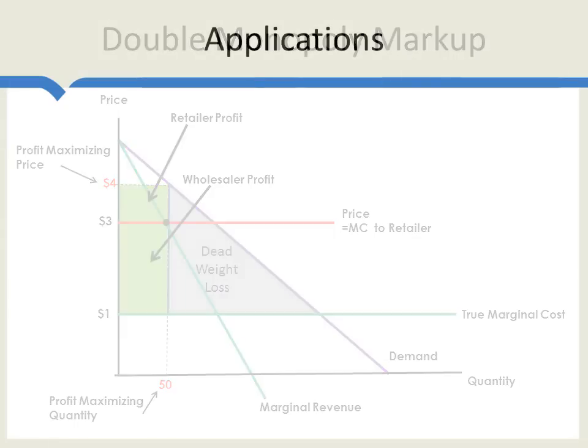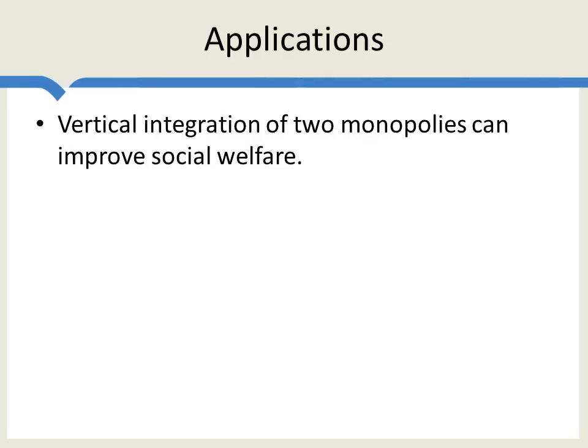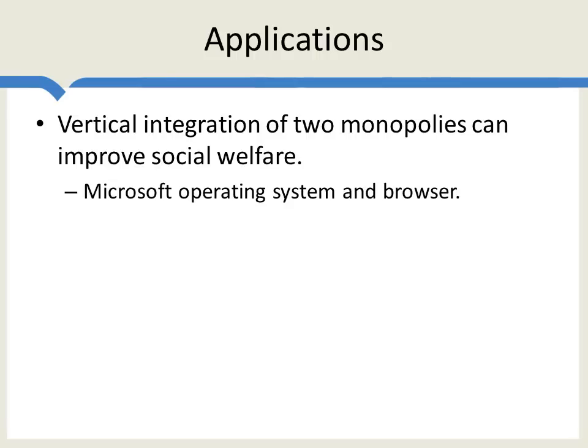Let's look at some applications. This model means that vertical integration of two monopolies can improve social welfare. Monopolies overall aren't great, but if you're going to have a monopoly, it's better to have one vertically integrated monopoly than two vertical monopolies. A classic example is Microsoft, which was accused of leveraging its monopoly in operating systems to get a monopoly in browsers. But consider: would you rather have Microsoft with a monopoly in operating systems and Netscape with a monopoly in browsers, or Microsoft with a monopoly in both? It's actually better for consumers for Microsoft to have a monopoly in both, because you get lower prices and increased output — and from Microsoft's point of view, higher profits as well.